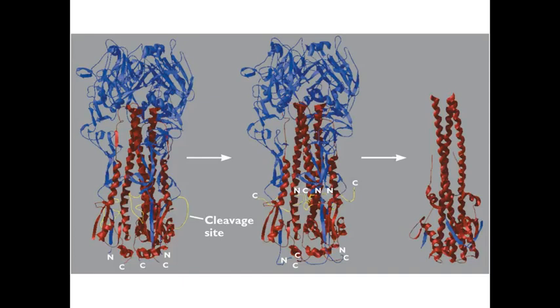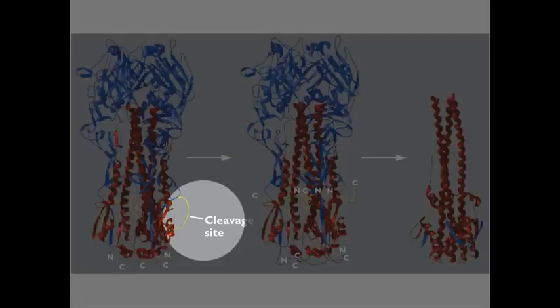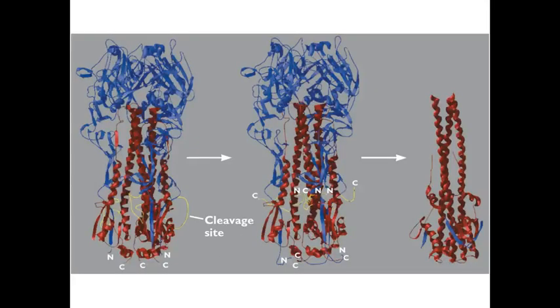In order for this molecule to undergo these dramatic conformational changes at low pH, it has to be cleaved right down here in this yellow loop where it says cleavage site. That is because the fusion peptide is located in this loop. So there's another control to make sure that fusion doesn't occur randomly. They have the fusion peptide buried in a sequence which has to be exposed by cleavage.